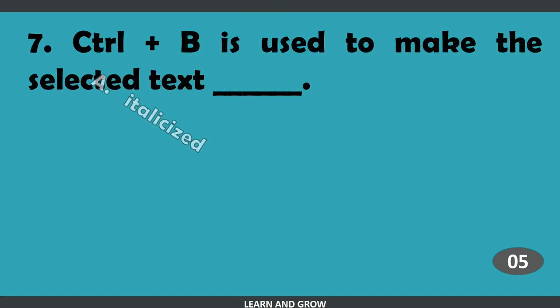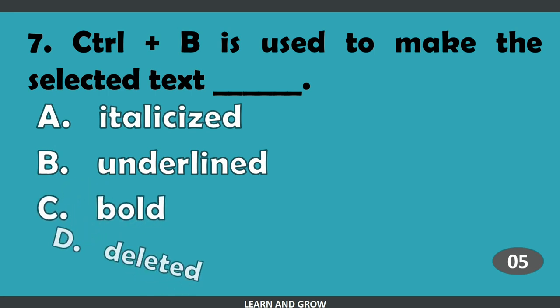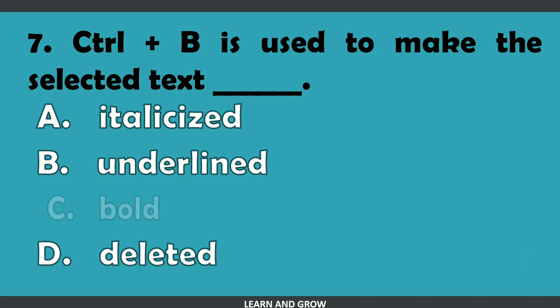Control plus B is used to make the selected text blank. The right answer is bold.